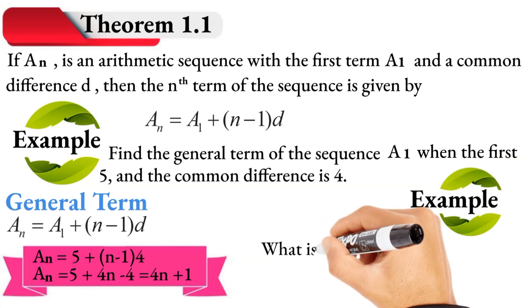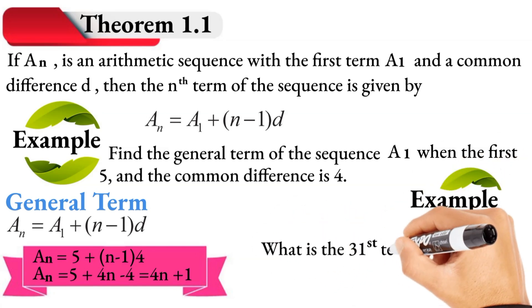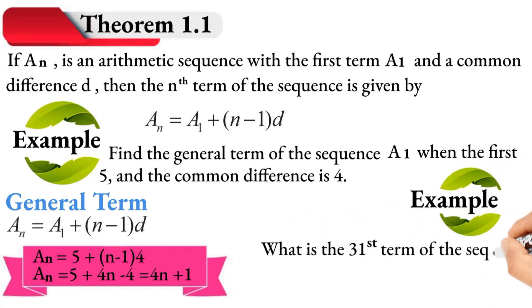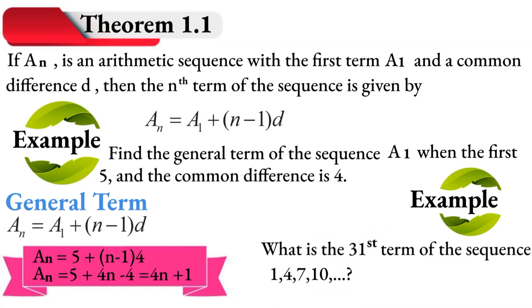For example, what is the 31st term of the sequence 1, 4, 7, 10? If you look at this sequence, you can see that the common difference is 3 — each term increases by 3. So the common difference D is 3.